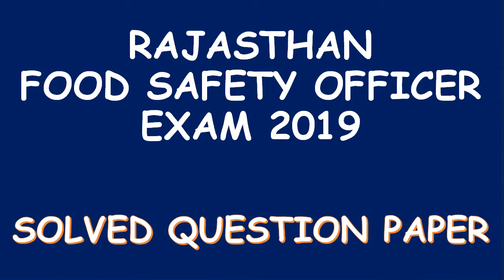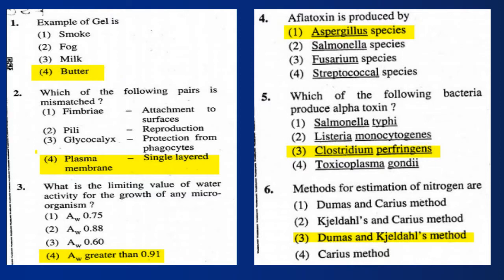Rajasthan Food Safety Officer Exam 2019 Solved Question Paper. Question 1: An example of gel is butter. Question 2: Which of the following pairs is mismatched? Answer: Plasma Membrane, Single Layout.